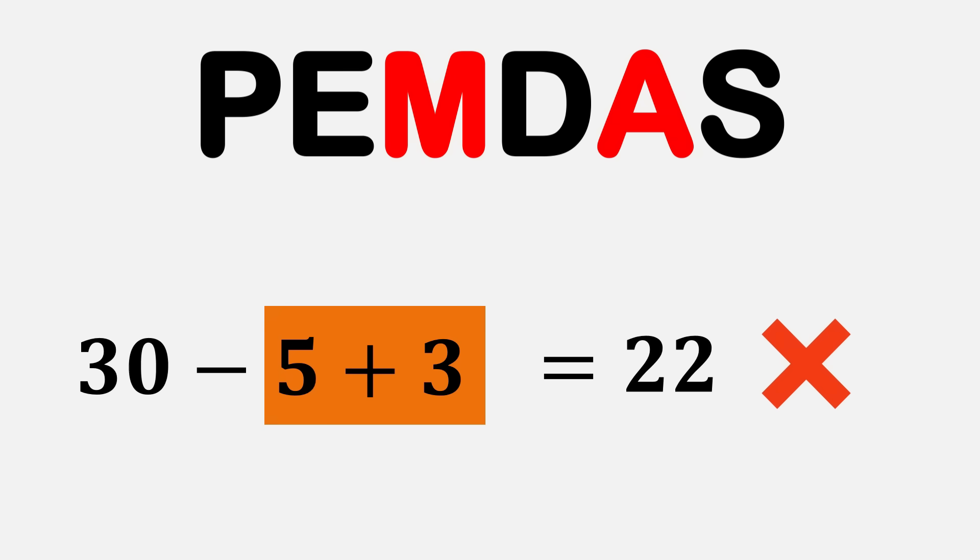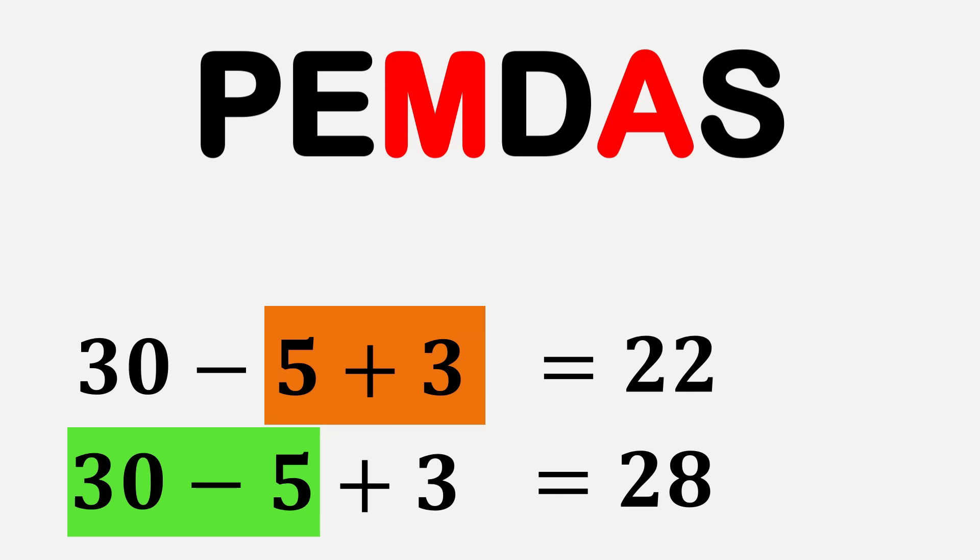Following the correct order, we move left to right. 30 minus 5 equals 25, and then 25 plus 3 equals 28. That's the correct way to solve it. This order keeps everything consistent. Without it, two people could do the same problem in two different ways and get two different answers.